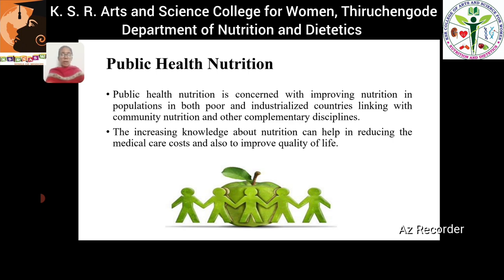What is the concern of public health nutrition? Public health nutrition's main concern is to improve the nutrition in public or population in both poor and industrialized countries, and it also links with community nutrients and other complementary disciplines. It is important because it increases knowledge about nutrition, which helps us to reduce the medical care cost and also to improve the quality of life.